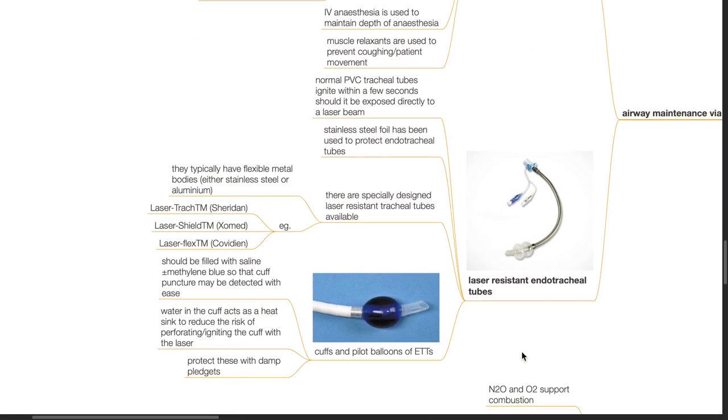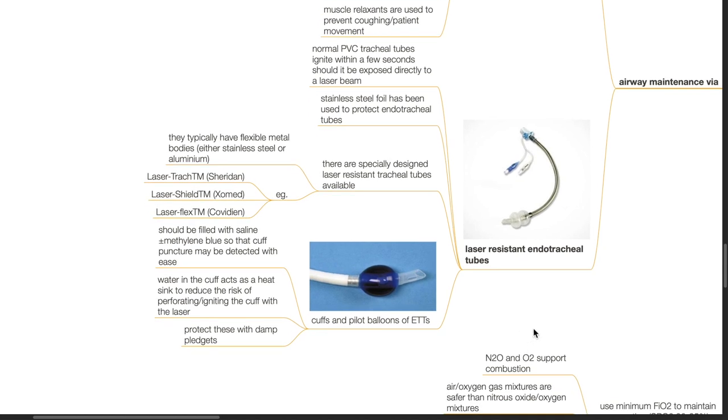Laser-resistant endotracheal tubes. Normal PVC tracheal tubes ignite within a few seconds should it be exposed directly to a laser beam. Stainless steel foil has been used to protect endotracheal tubes. Specially designed laser-resistant tracheal tubes are available. These typically have flexible metal bodies, either stainless steel or aluminum. Examples include Laser Track TM by Sheridan, Laser Shield TM by Zomad, Laser Flex TM by Corvidian. The cuffs and pilot balloons of ETTs should be filled with saline with or without methylene blue so that cuff puncture may be detected easily.